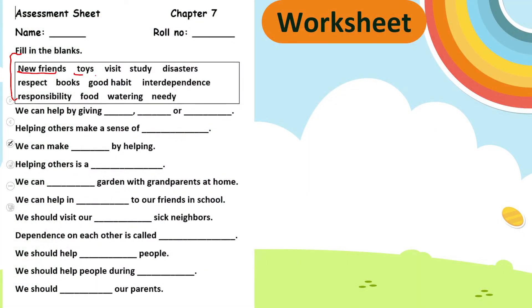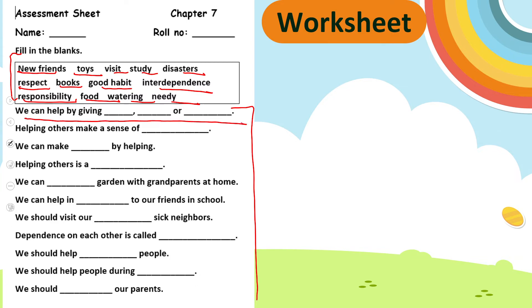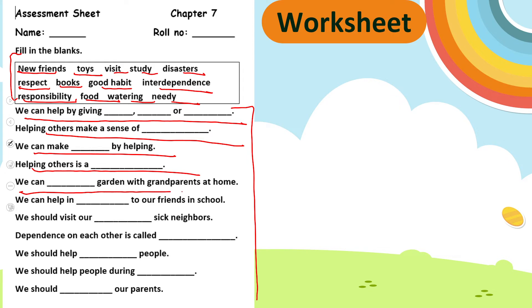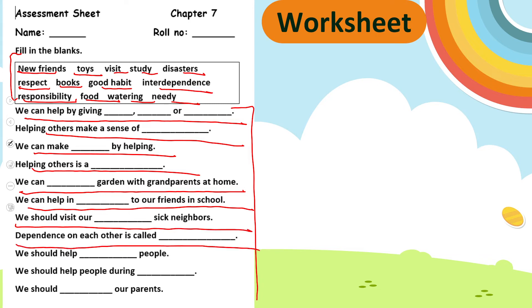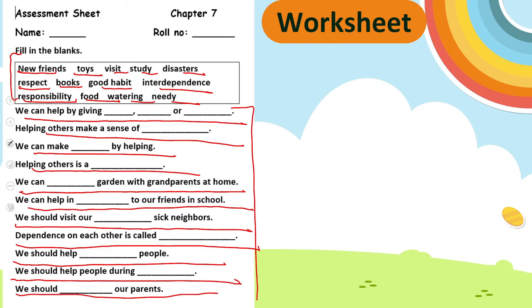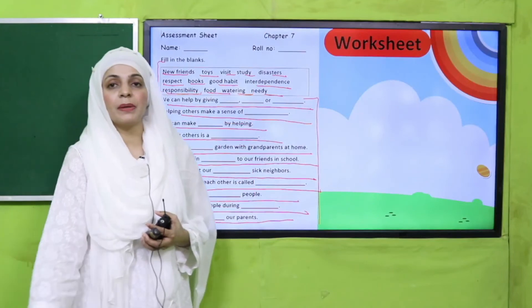My dear students, yahan aapko word bank diya gaya hai: new friends, toys, visits, study, disasters, respect, books, good habit, interdependence, responsibility, food, watering, needy. Aapko in suitable words ko suitable space mein fill karna hai. We can help by giving dash or dash. Helping others makes a sense of dash. We can make dash by helping others. In a dash, we can dash garden with grandparents at home. We can help in dash to our friends at school. We should visit our dash sick neighbors. Dependence on each other is called dash. We should help dash people. We should help people during dash. We should dash our parents.